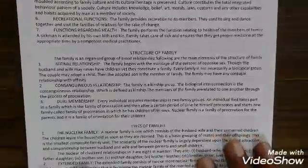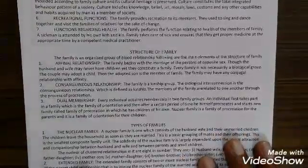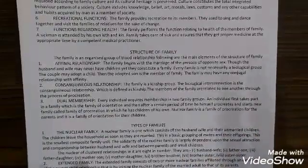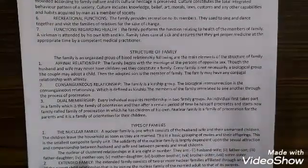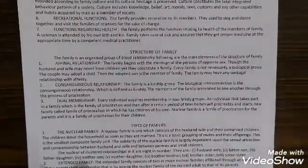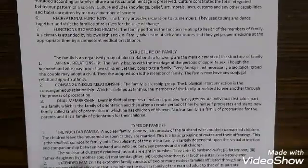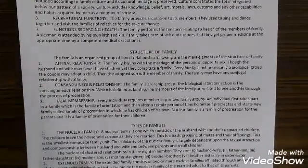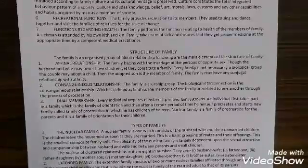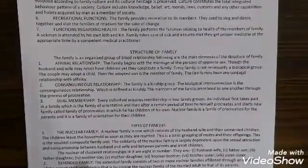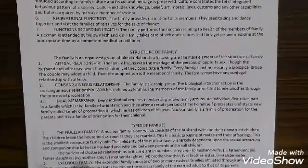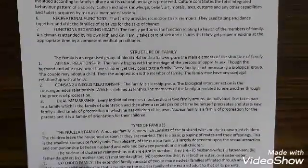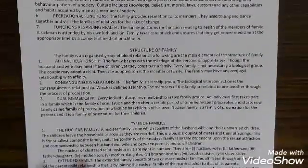Now, the structure of family. The family is an organized group of blood relationship. Following are the main elements of the structure of family. A family is a well-organized group of all those persons who are related to each other through blood. The main elements of the structure of family are three.